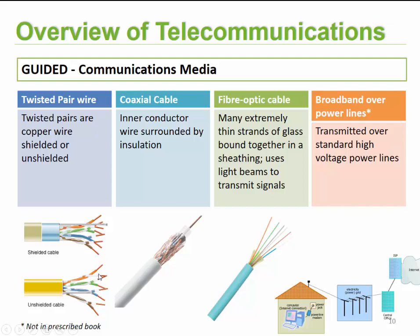Unshielded twisted pair wires are simply placed within a protective covering, while shielded twisted pair contains additional mesh and foil-like covers that protect them further from outside interference, allowing the signal to travel a little farther and faster. Twisted pair cables are typically found in the form of telephone wires.